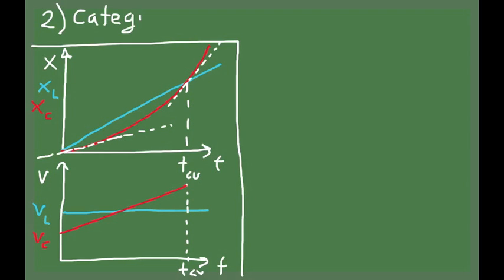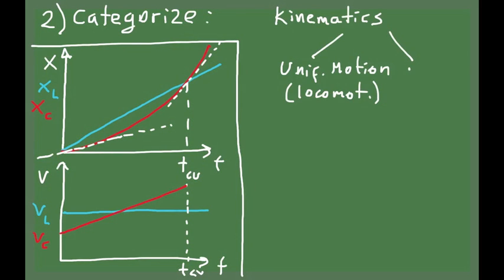The second step in solving this problem — and in general any problem — is to categorize the problem. That means finding out what kind of concepts, chapters, and topics are involved in the solution. This problem is clearly a kinematics problem. It has one object, the locomotive, moving with constant velocity, and a car moving with constant acceleration — so we have two kinds of motion: uniform motion and uniformly accelerated motion.